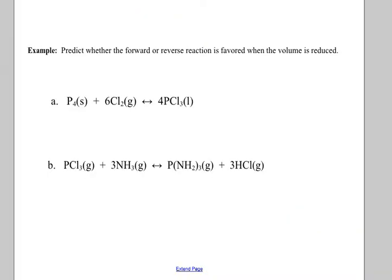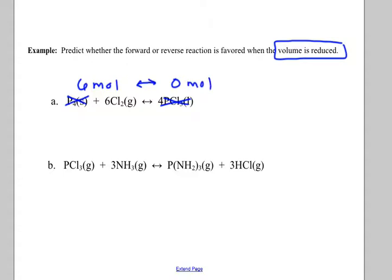Let's predict whether the forward or reverse reaction would be favored when volume is reduced. Volume is reduced — change in volume, so only gases matter. How many moles of gas on the left side of this equation? There's a solid on one side — that counts as zero — so six moles of gas on the left. On the right side, it's a liquid — zero moles of gas. My house is small. Would I hold six moles of gas or no moles of gas? No moles — I shift to the right, favoring the forward reaction.